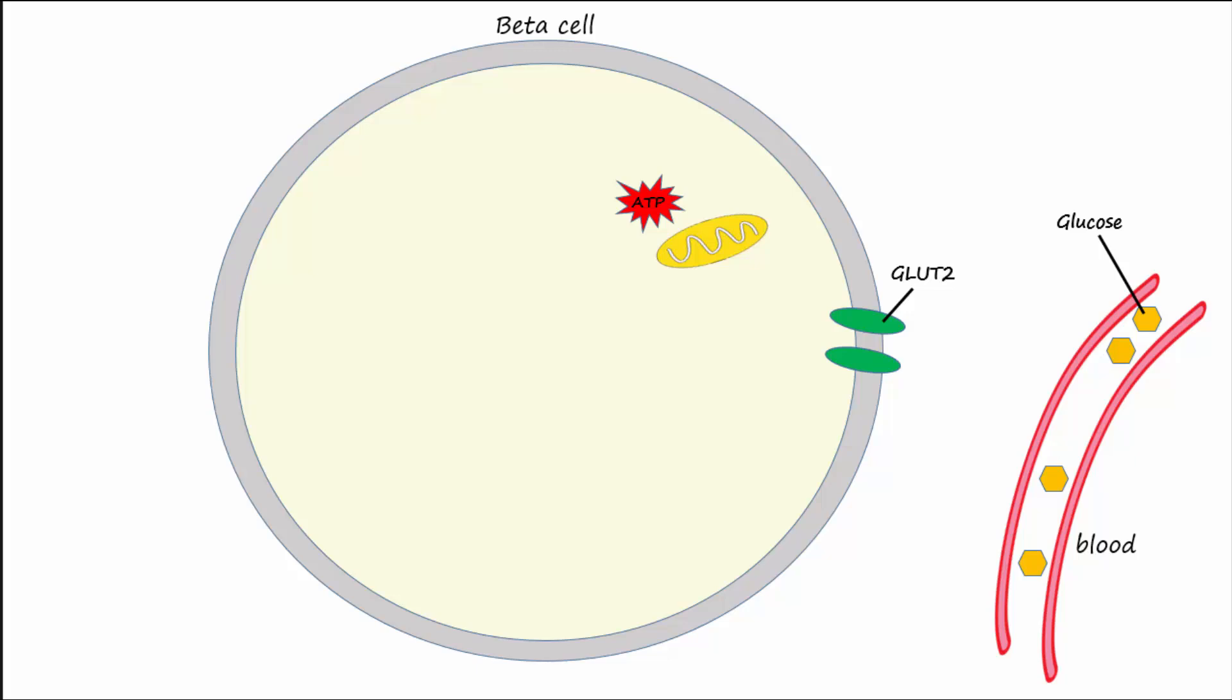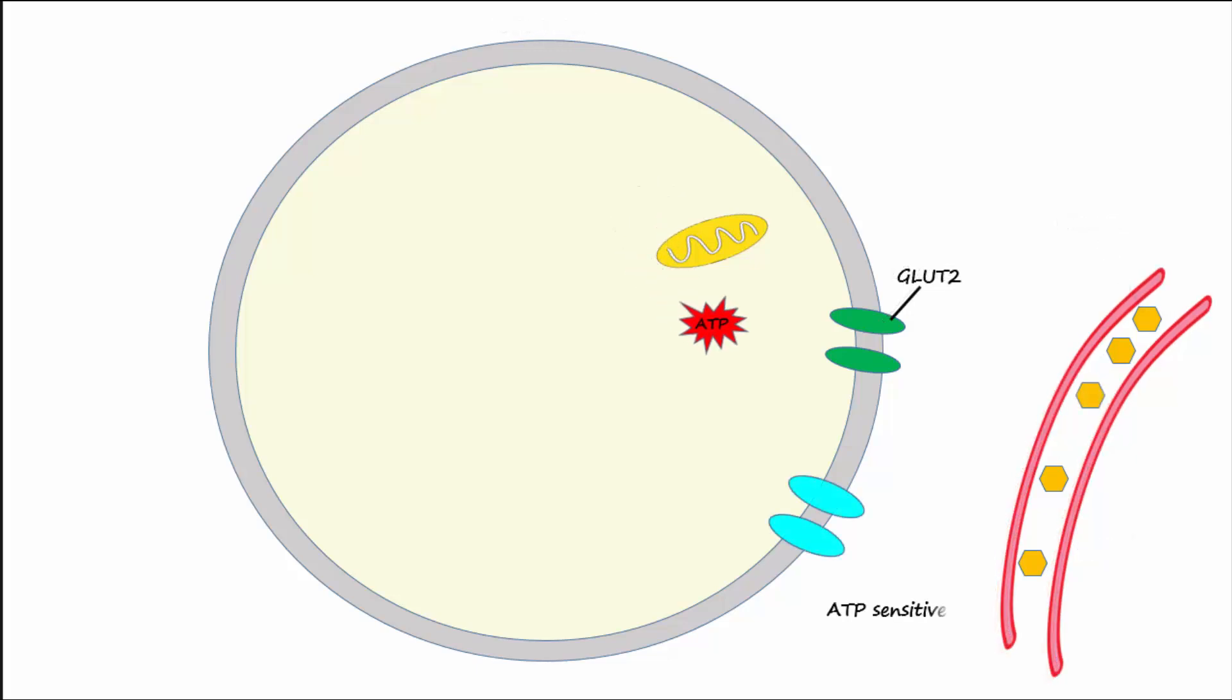ATP will bind to ATP-sensitive potassium channels in the membrane and close them. This causes depolarization since the potential for potassium to leave has decreased. The level of depolarization will cause a corresponding number of calcium voltage-gated channels to open.